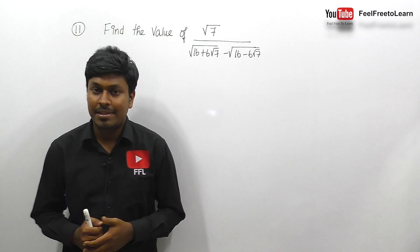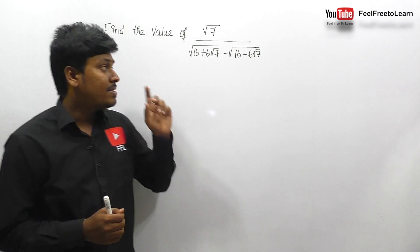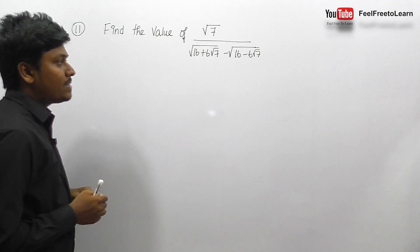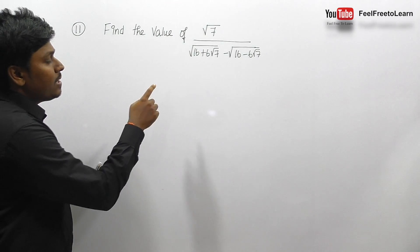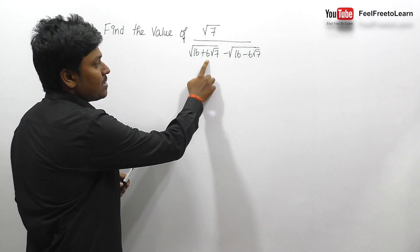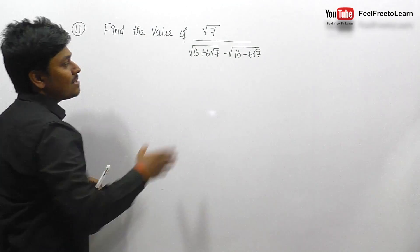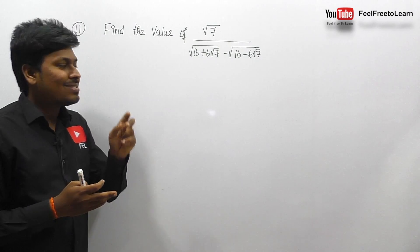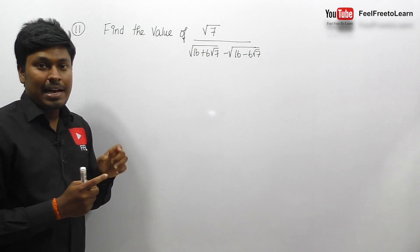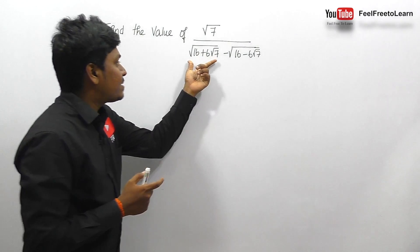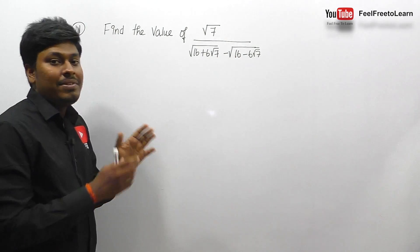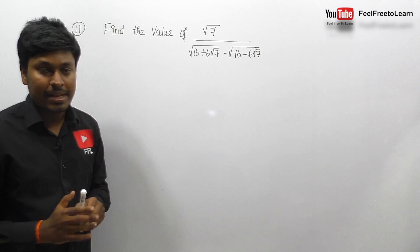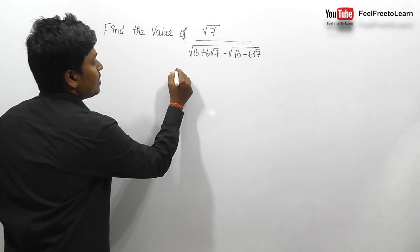Let me move on to set number 3 on the topic algebra. Here is question number 11: we need to find the value of the expression √7 divided by (√(16+6√7) minus √(16-6√7)). Always remember, while solving this type of expression, we need to convert it in terms of (a+b)² or (a-b)². The numerator is √7.